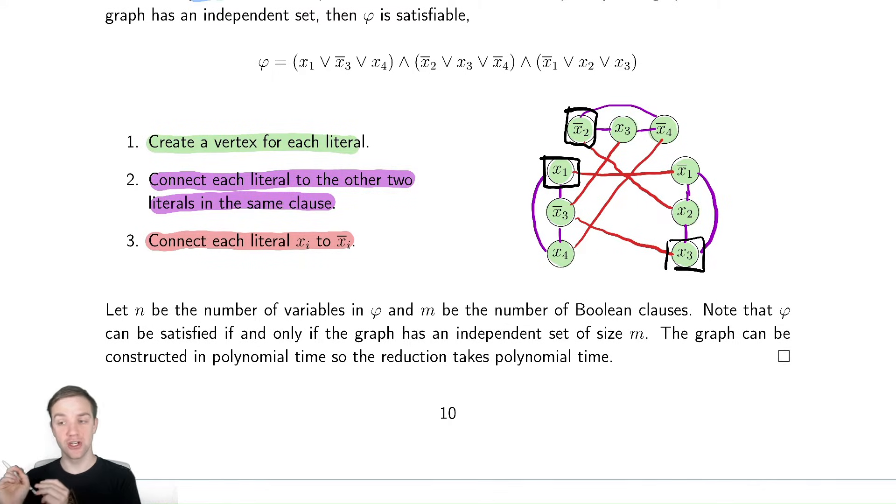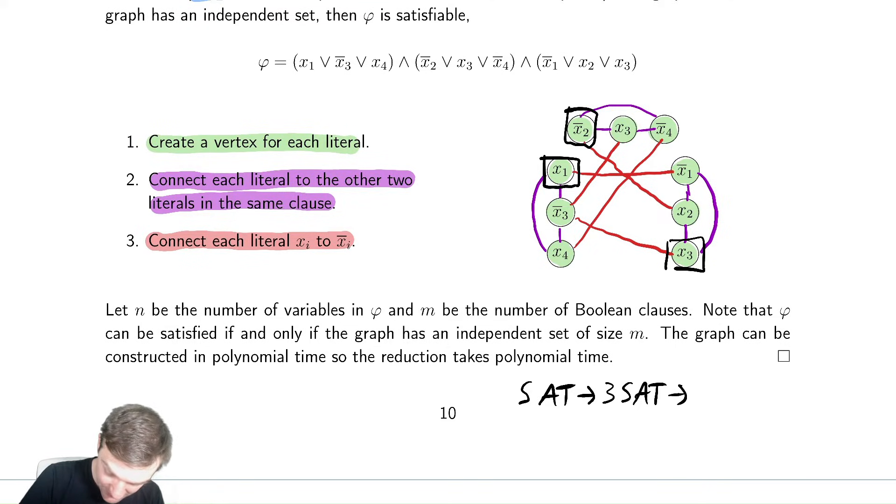By doing this graph construction, we rewrite a problem which was a Boolean satisfiability problem in terms of this new graph theory problem, the independent set problem. 3-SAT can be reduced to independent set. Therefore, if I can solve independent set, I can solve 3-SAT, which means I can solve SAT. So far we've showed SAT reduces to 3-SAT, reduces to independent set.